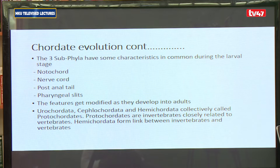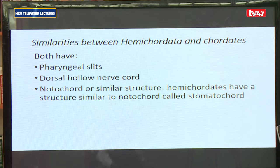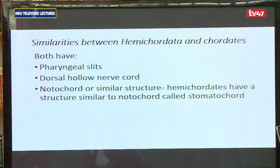The hemichordata specifically give us the link between invertebrates and the vertebrates. In the case of the hemichordata, they are related to the chordates because, although they are in a different phylum, they do have pharyngeal slits like the chordates have, they also have a nerve cord like the chordates have, and they also have a structure similar to the notochord of the chordates but slightly simpler, referred to as a stomatochord. Because of these characteristics, the hemichordata are related to the chordates.